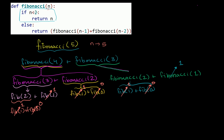The whole time the interpreter is processing this recursive function call, it has to remember all of the previous steps — how it got there. Once it gets down to the base cases where n equals 1 or 0 and gets actual numeric responses, it then builds back up. So Fibonacci of 2 is 1 plus 0, which equals 1. Fibonacci of 3 is Fibonacci of 2 plus Fibonacci of 1, which is 1 plus 1, equaling 2.